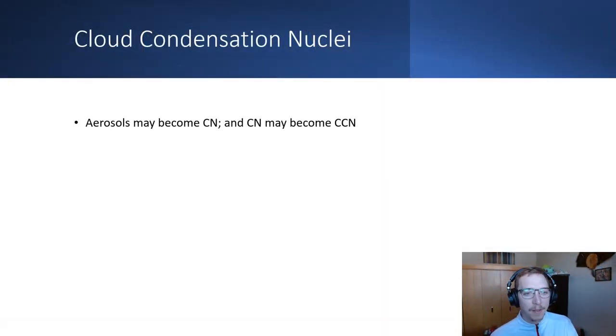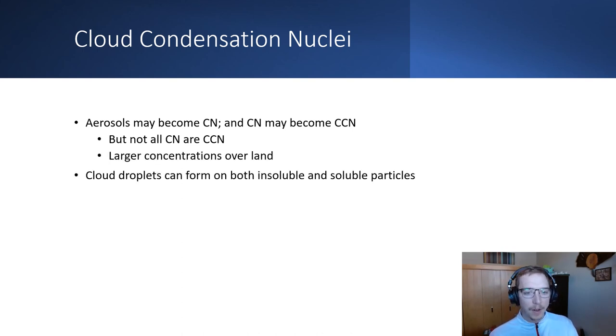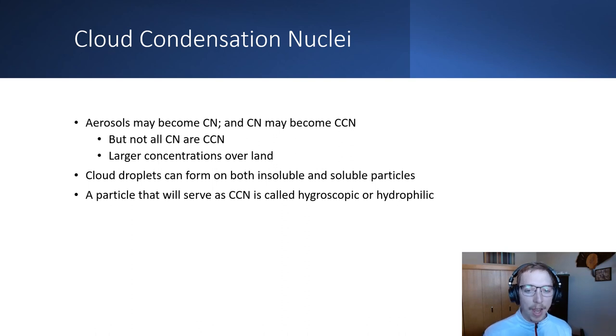So, cloud condensation nuclei, basically aerosols for the most part. Aerosols can become cloud or condensation nuclei, and condensation nuclei can become cloud condensation nuclei. It's kind of, you can have a rectangle and a square, a square and a rectangle, that kind of thing. But here, not all condensation nuclei are cloud condensation nuclei. Why? Well, we'll get to that here in a second. So, we typically see larger concentrations over land for these types of particles. Cloud droplets can form on both insoluble and soluble particles, and a particle that will serve as a cloud condensation nuclei is called hygroscopic or hydrophilic, as opposed to hydrophobic. Condensation may occur at relative humidity less than a hundred percent, as I mentioned before.